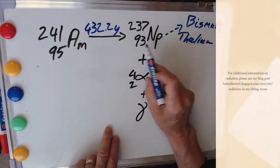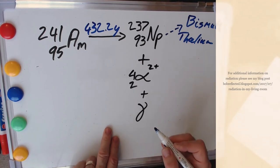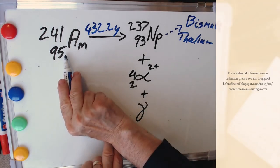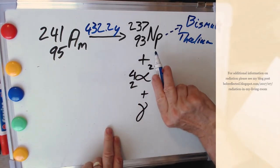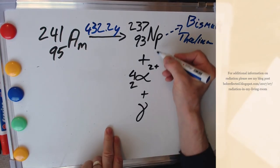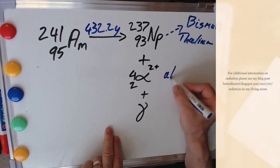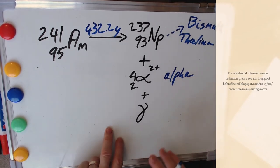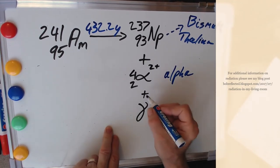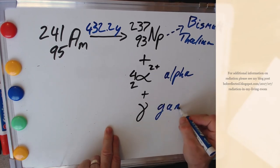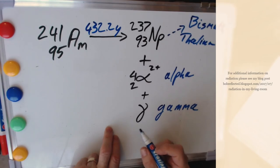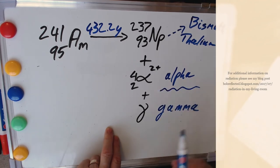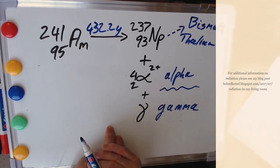But in decaying from this form of americium to neptunium, we've also got, given off, alpha radiation, which has this symbol here. And also small amounts of gamma radiation. Now I stress this is quite a small amount. It's this one that actually is doing all the work in terms of ionizing the oxygen and nitrogen in our ionization chamber in the smoke detector.